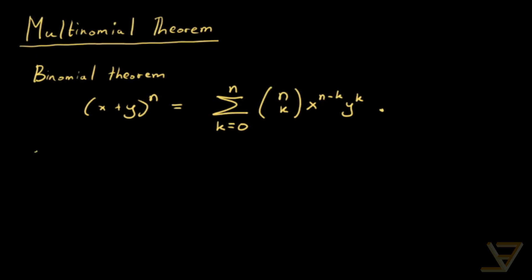So the next question is how can we generalize this? We want to expand an expression that looks like x1 plus x2 all the way through to xm for some positive integer m to the power of n. And we want to know what that looks like after expansion and collecting like terms.